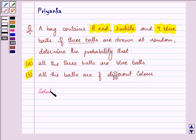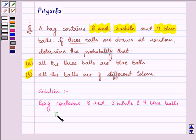So let's proceed with the solution. First of all, we are given that the bag contains 8 red, 3 white and 9 blue balls. So total number of balls are equal to 8 plus 3 plus 9. That is further equal to 20 balls.